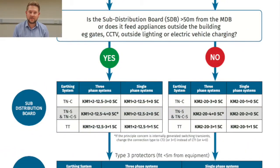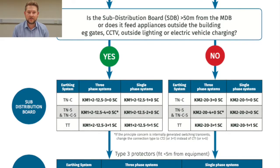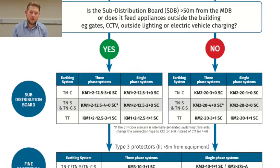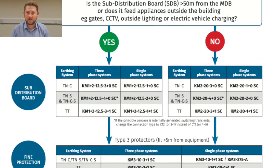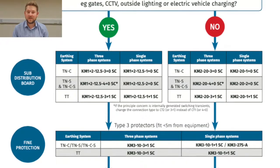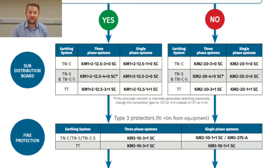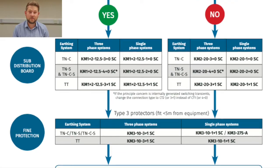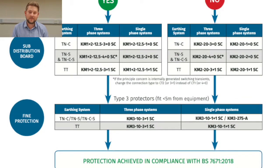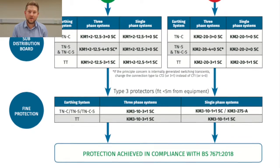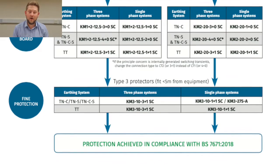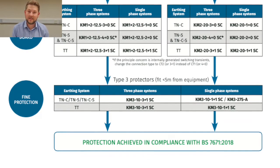The final consideration is fine protection, or type 3 devices. Type 3 devices are typically installed within 5 meters of the terminal equipment — meaning anything from servers to computers, or anything of particular importance or value that we're looking to protect. These devices are very simple to select; we only need to know the phase, whether it's three phase or single phase. We have two types: one is DIN rail mountable, a modular device, and the second is a three-wire connection which can be installed inside trunking, within ceilings, or anywhere else where a DIN rail mountable device isn't suitable.